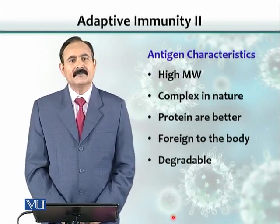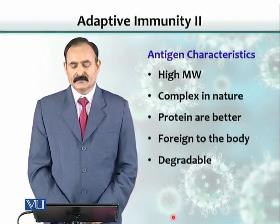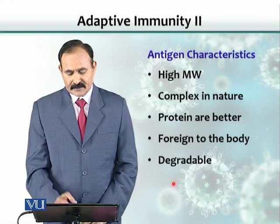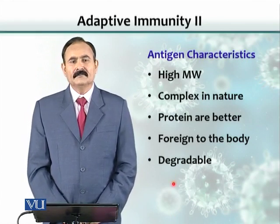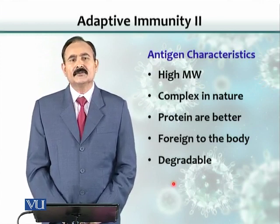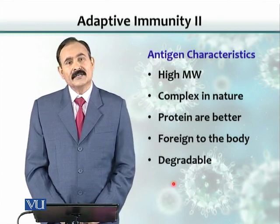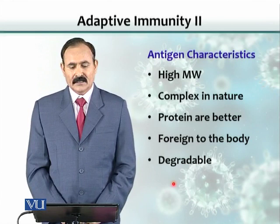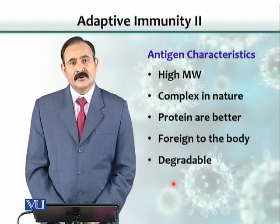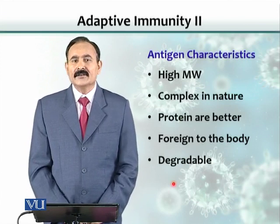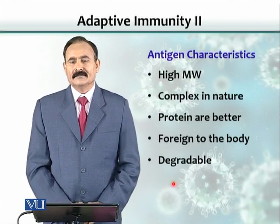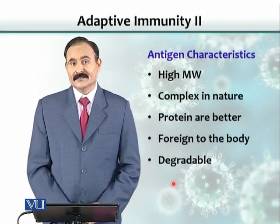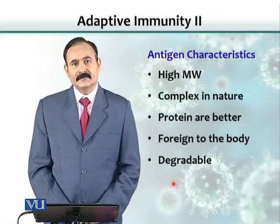Third, the antigen should be foreign to the body. There are many proteins in the body that the body does not react against, so any substance acting as an antigen must be foreign. Fourth, and also very important, the molecule acting as an antigen must be able to be degraded by body enzymes. A good example is patients who receive metal or iron rods to fix broken bones — that iron rod is inert and is not degraded by any body enzymes. So although it is foreign to the body, it does not induce any immune response simply because it is not degradable.